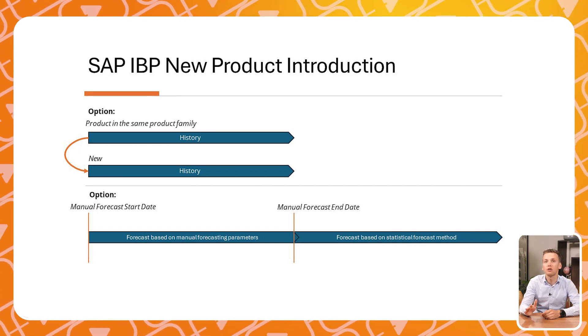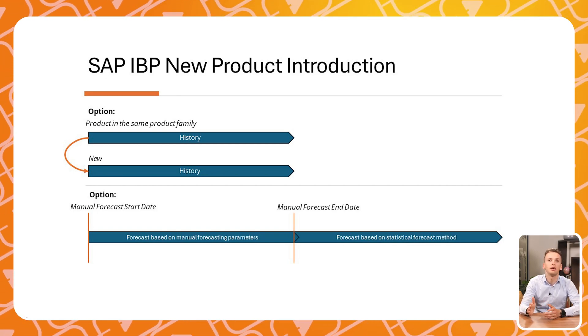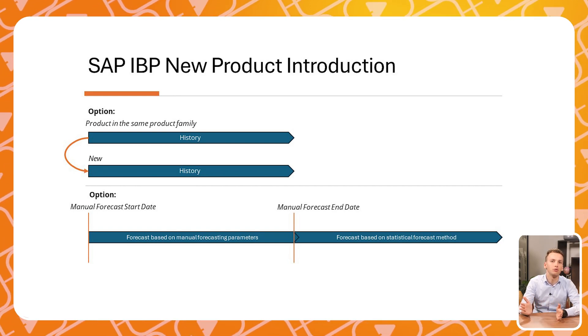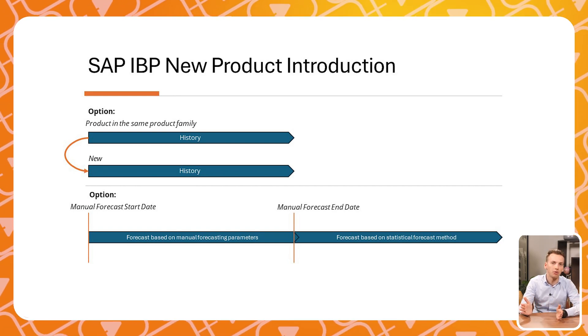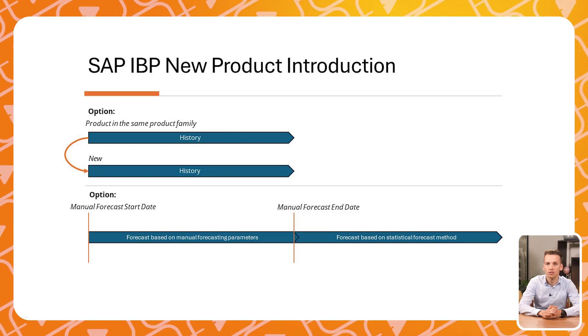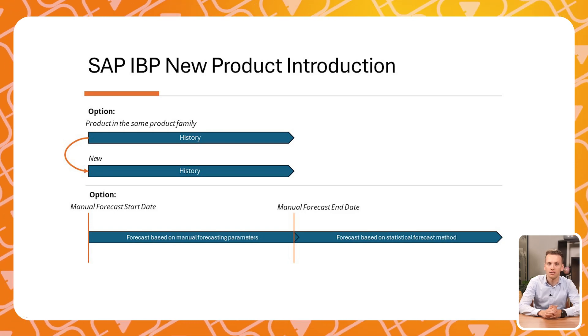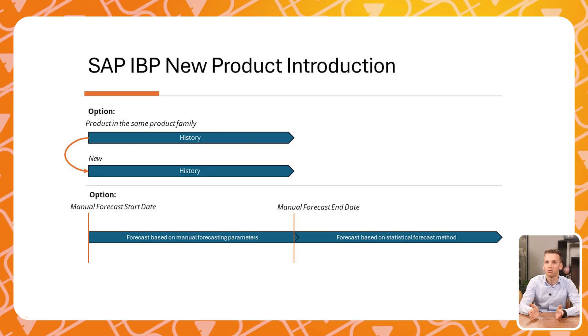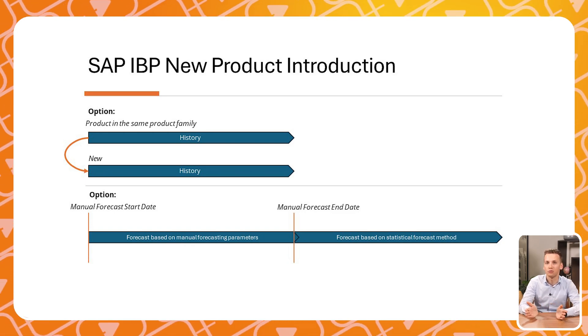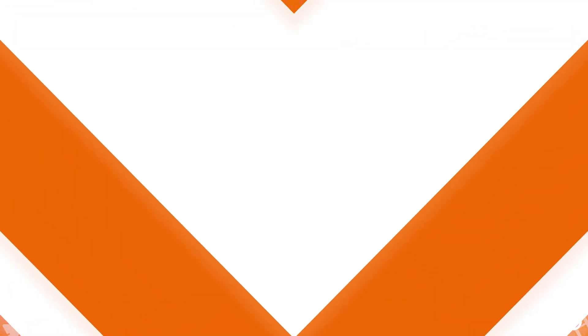If that's not the way to go for you, then maybe try the manual forecasting app, where you can maintain relevant forecasting parameters yourself and later switch to statistical forecasting. Are you already amazed by the capabilities of SAP IBP and curious to know more? Then subscribe to the channel.